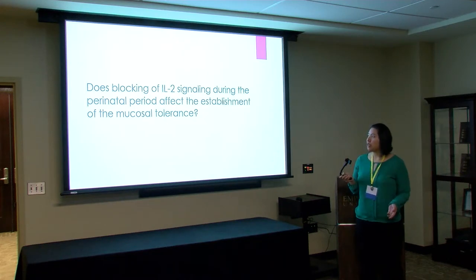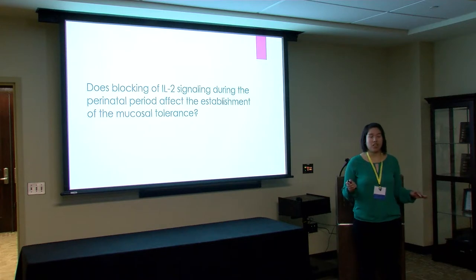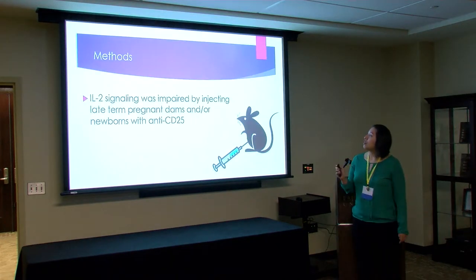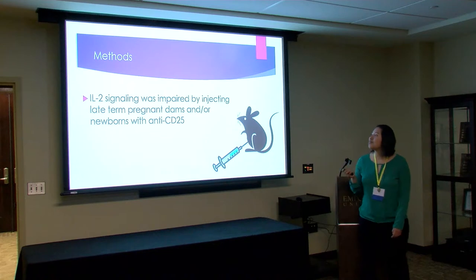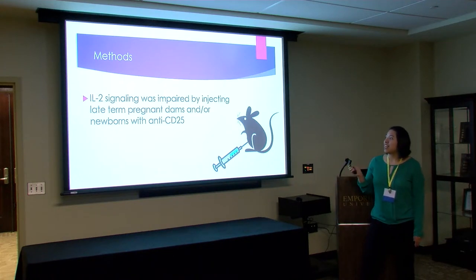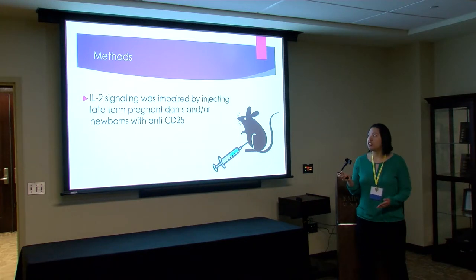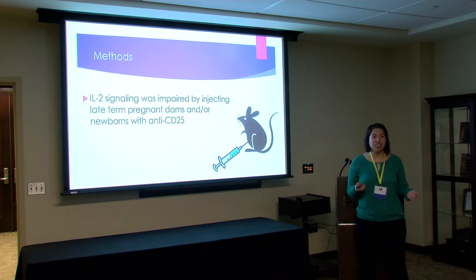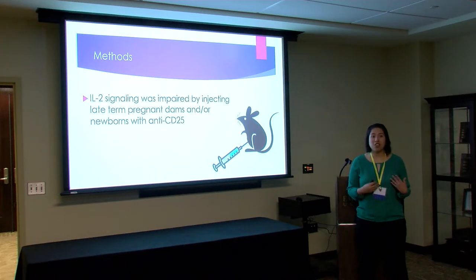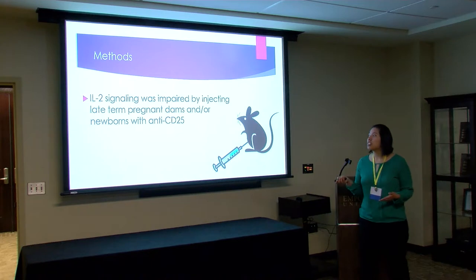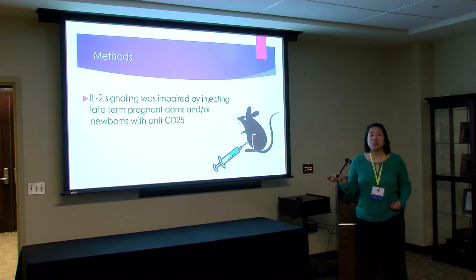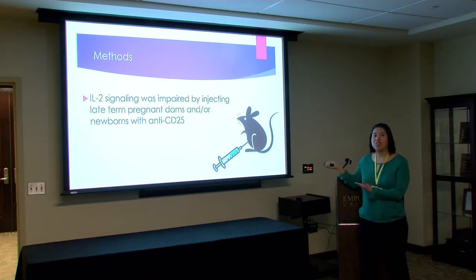When we say perinatal period, it means the first 20 days from birth. We injected mice when they were pregnant, or injected the newborns, with anti-CD25, which would block the interleukin-2 signaling. The pregnant dams were injected because the antibody has been proven to cross the placenta and reach the newborn, so we expect the interleukin-2 blockage to occur from the time the pup is born.